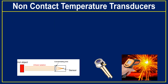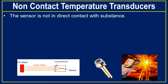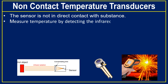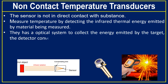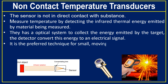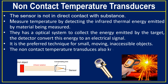Non-contact temperature transducers have a sensor that is not in direct contact with the substance. They measure temperature by detecting the infrared thermal energy emitted by the material being measured. The non-contact thermometer has an optical system to collect the emitted energy, and a detector converts this energy to an electrical signal. Non-contact temperature transducers are the preferred technique for small, moving, or inaccessible objects, and are also known as pyrometers.